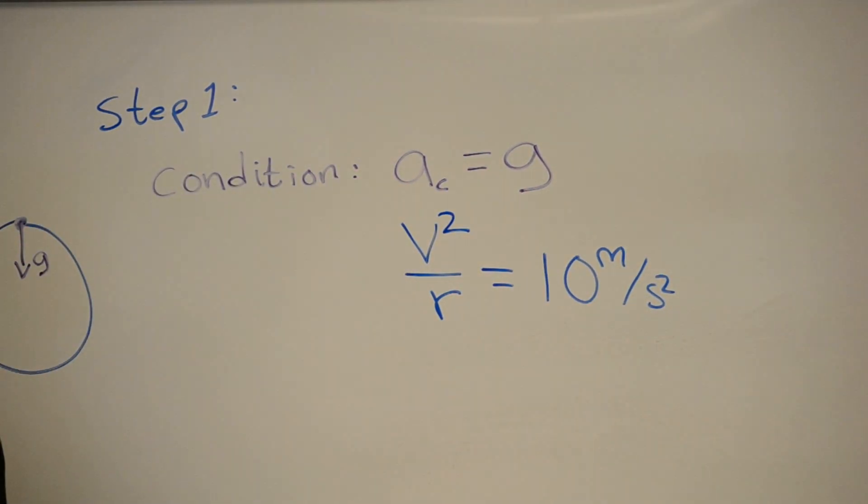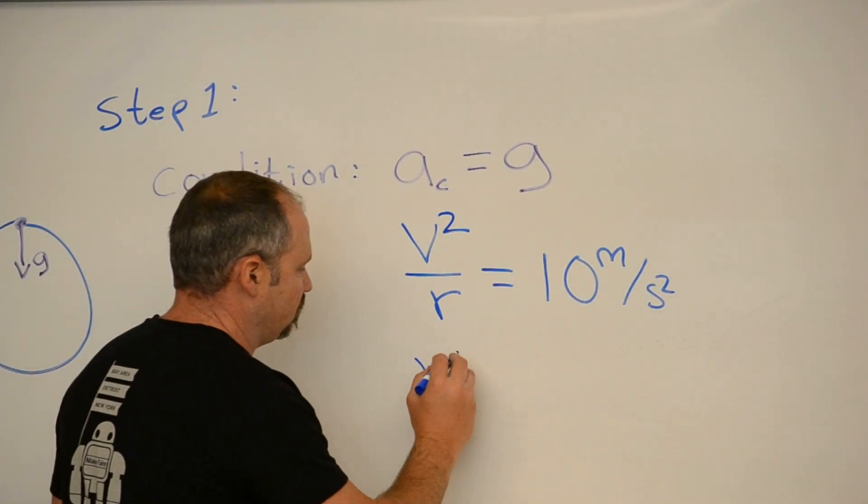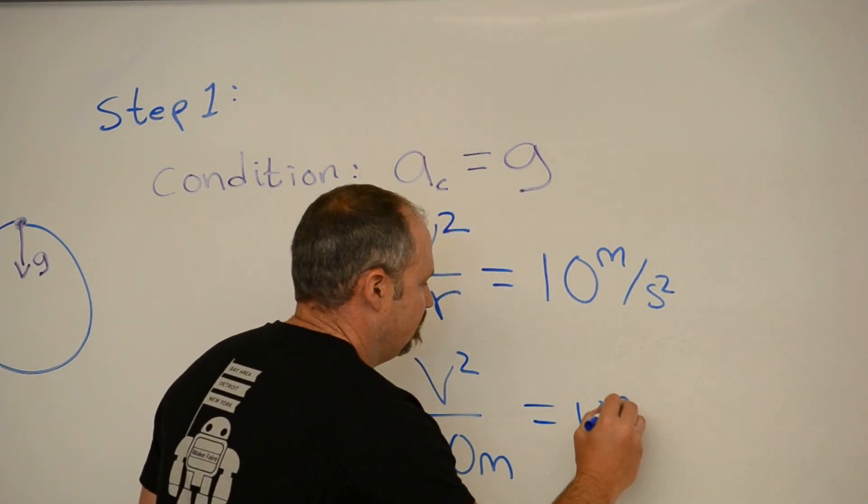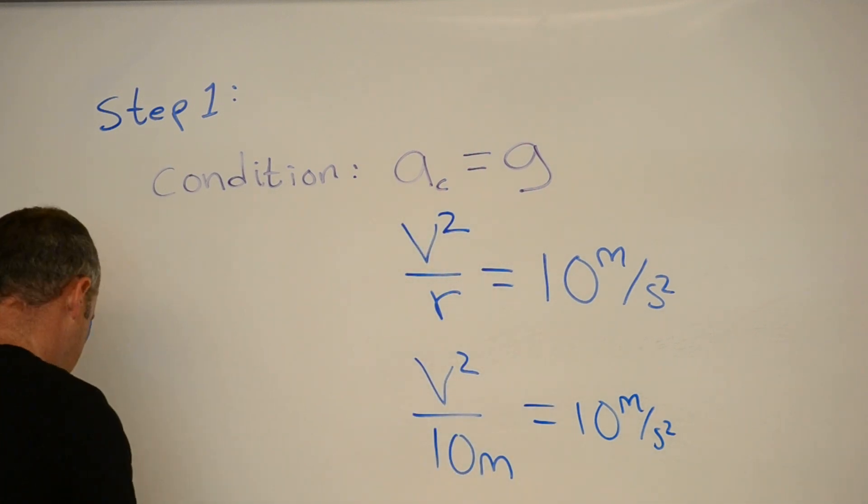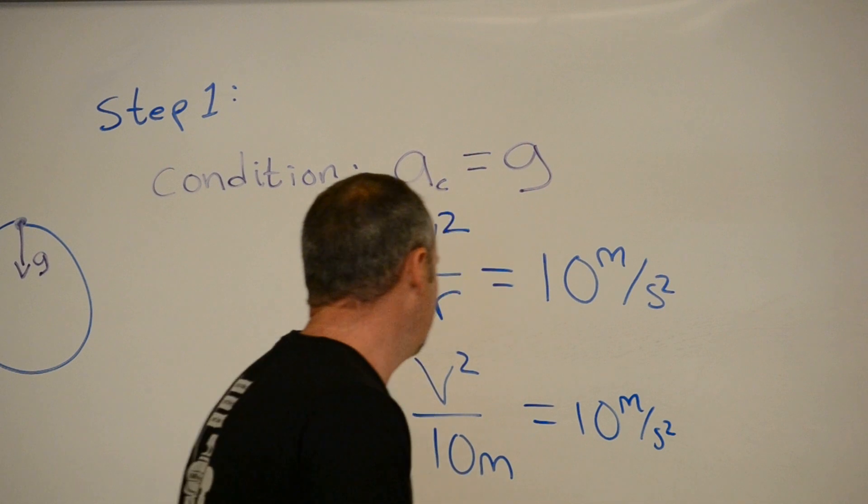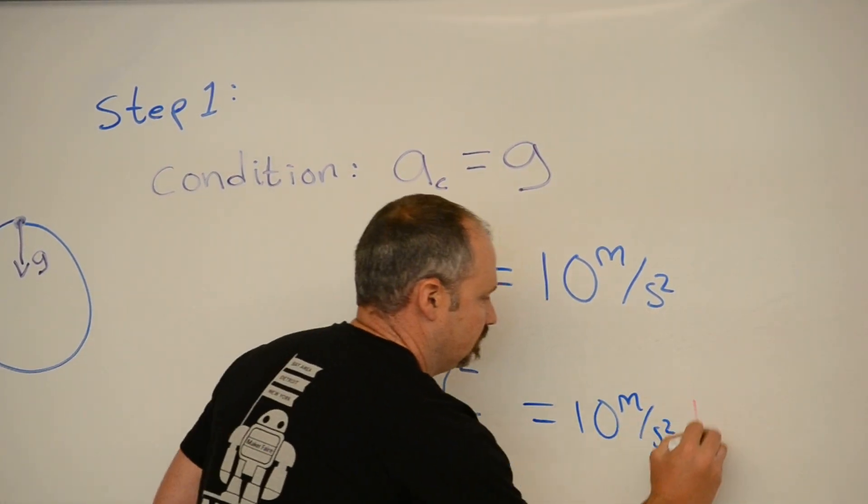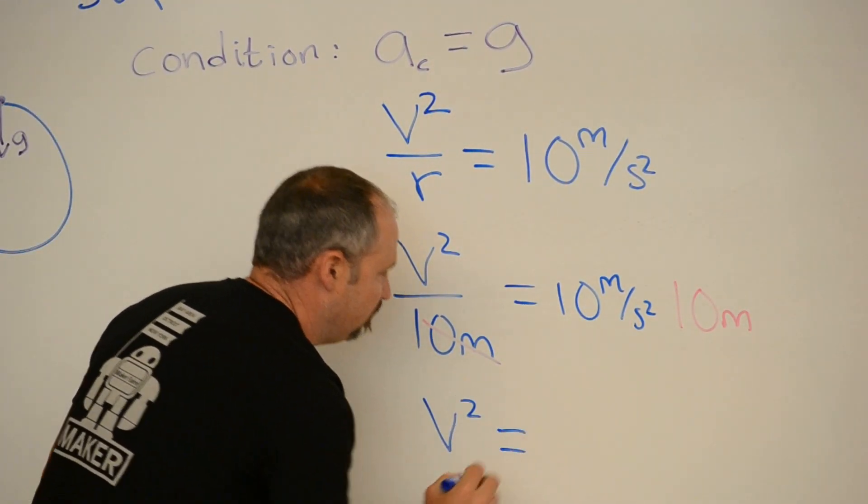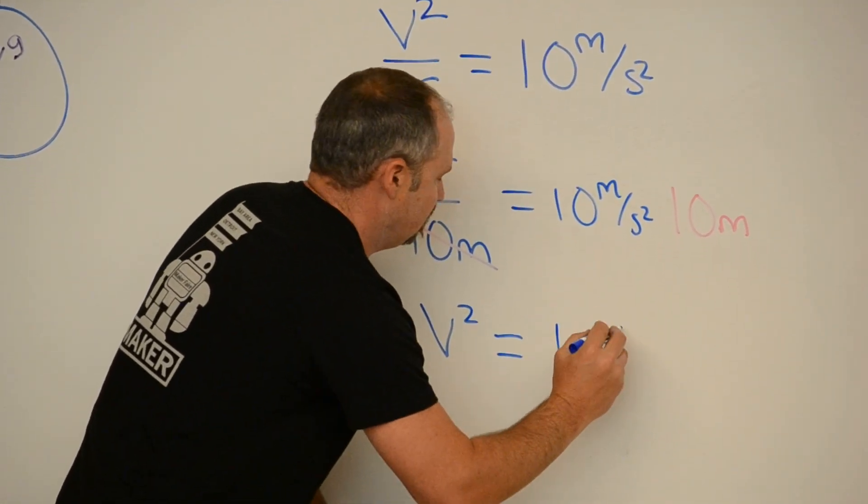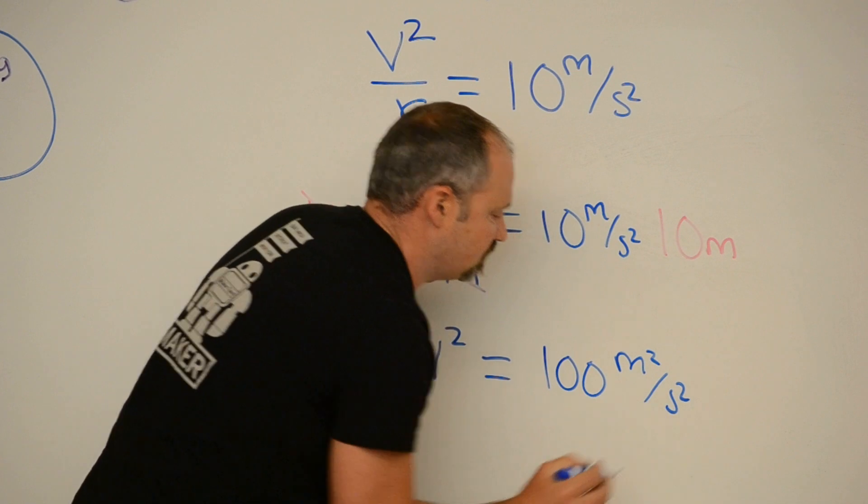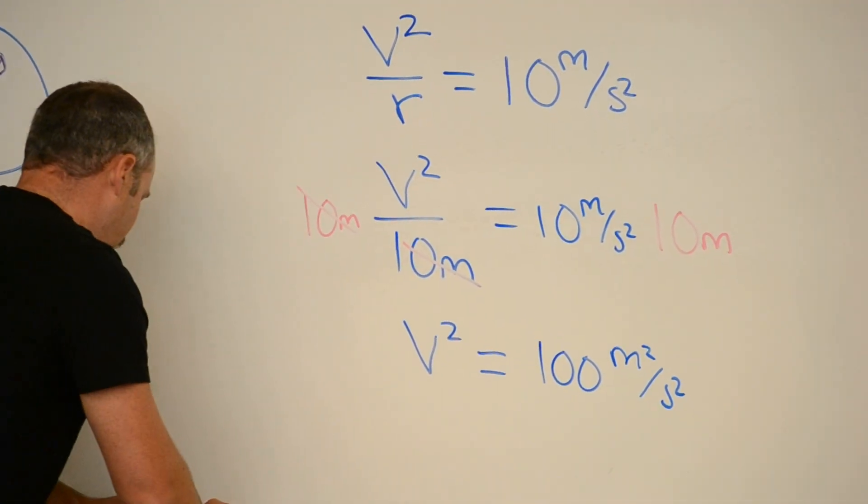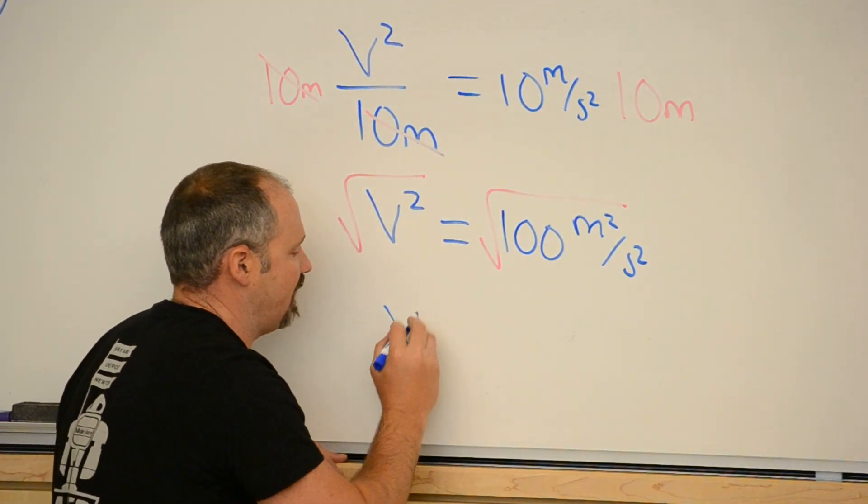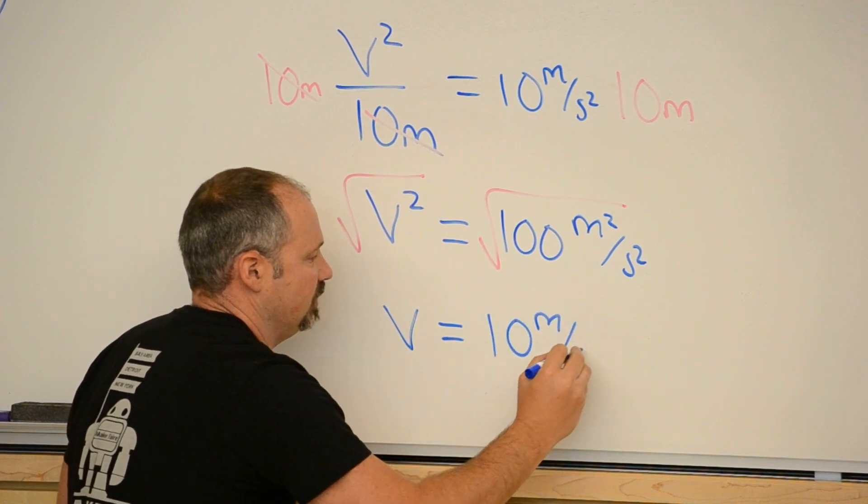We also know the loop radius, so that's v squared all over 10 meters, and that's equal to our 10 meters per second squared here. And if I multiply both sides by 10 meters, I get that the speed v squared is equal to 100 meters squared per second squared. And therefore, if I take the square root of both sides, I get that the minimum speed necessary at the top of the loop is 10 meters per second.